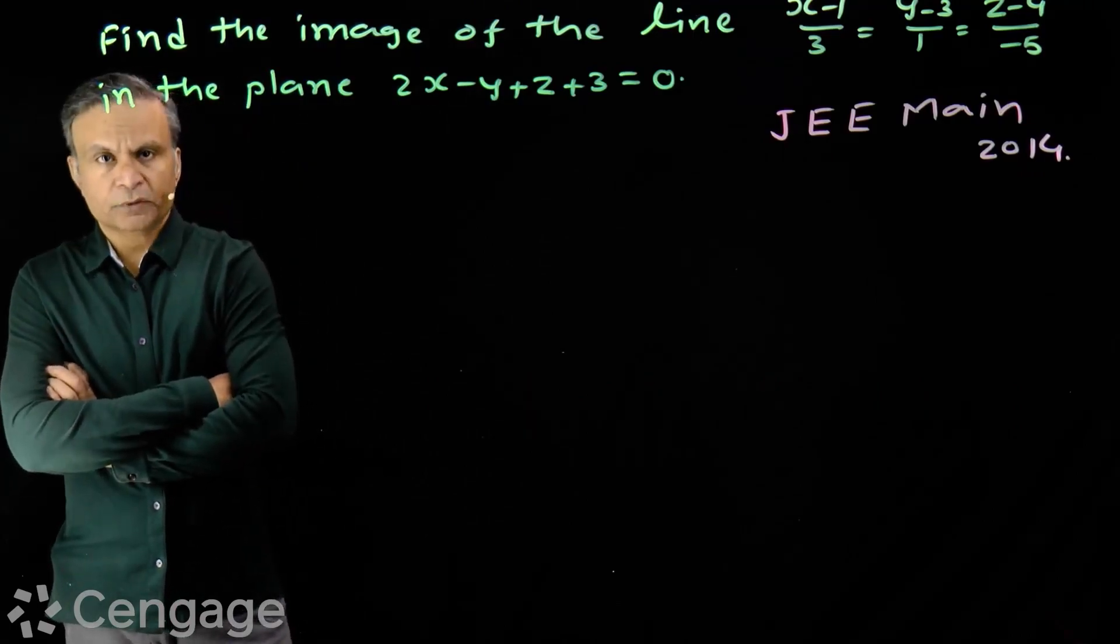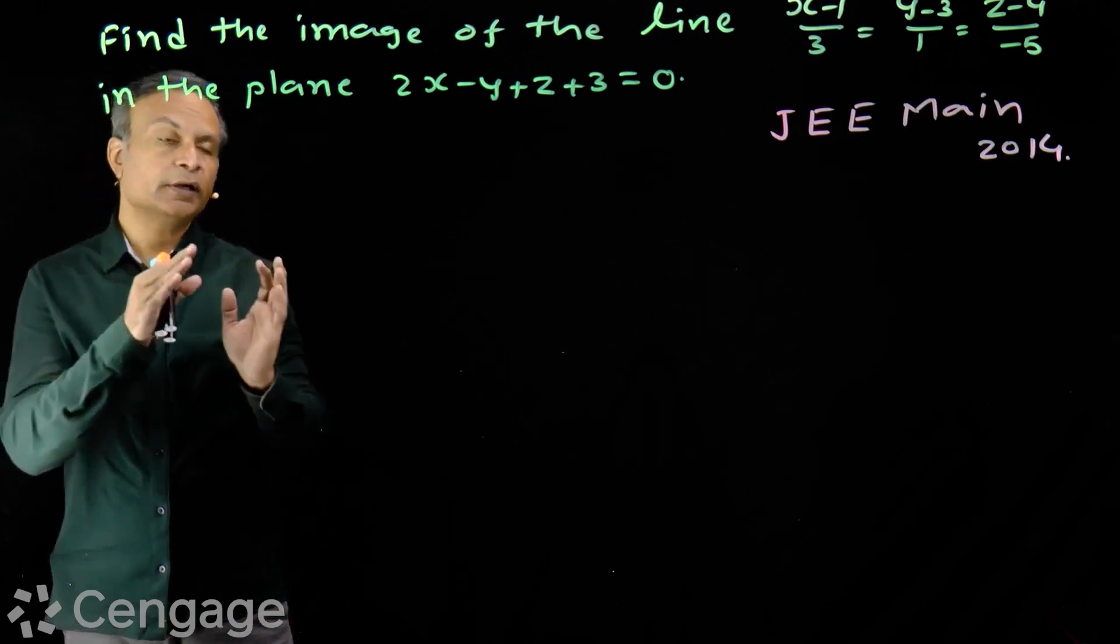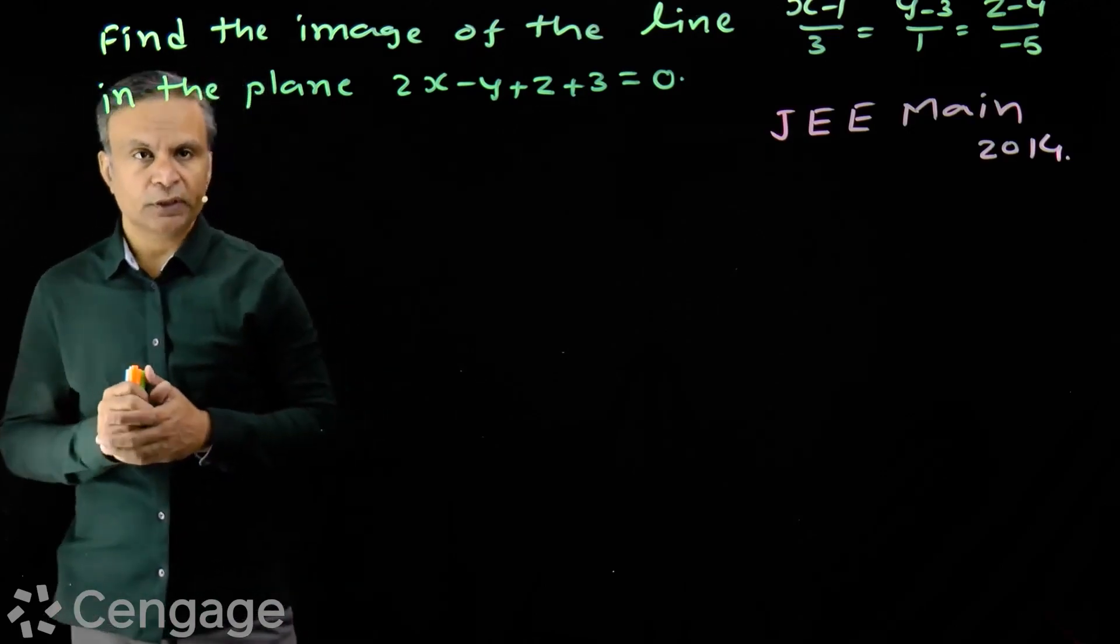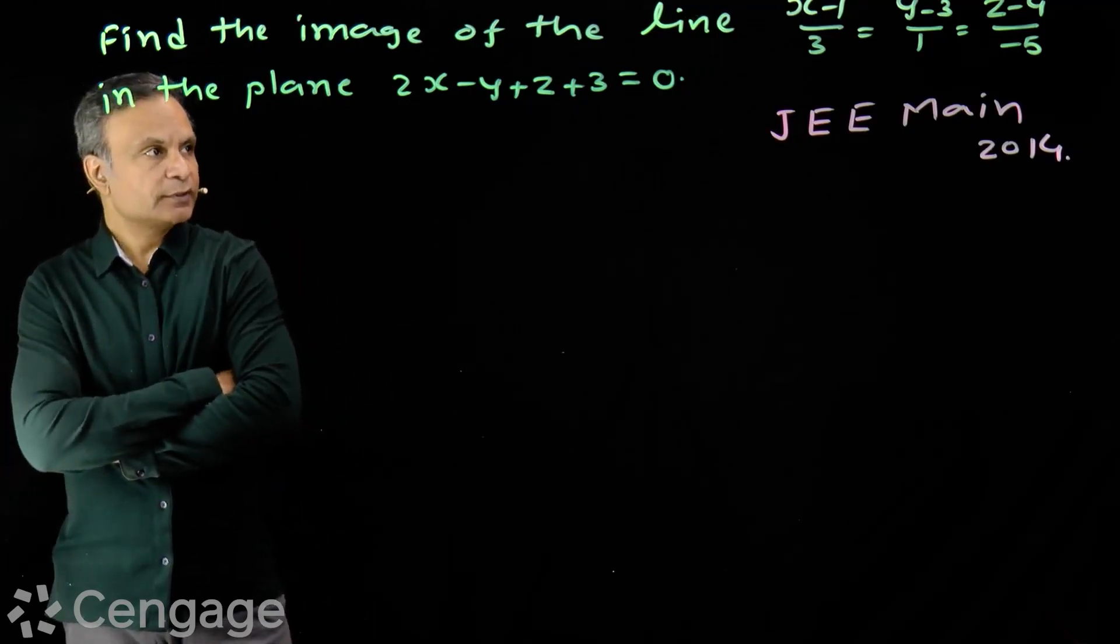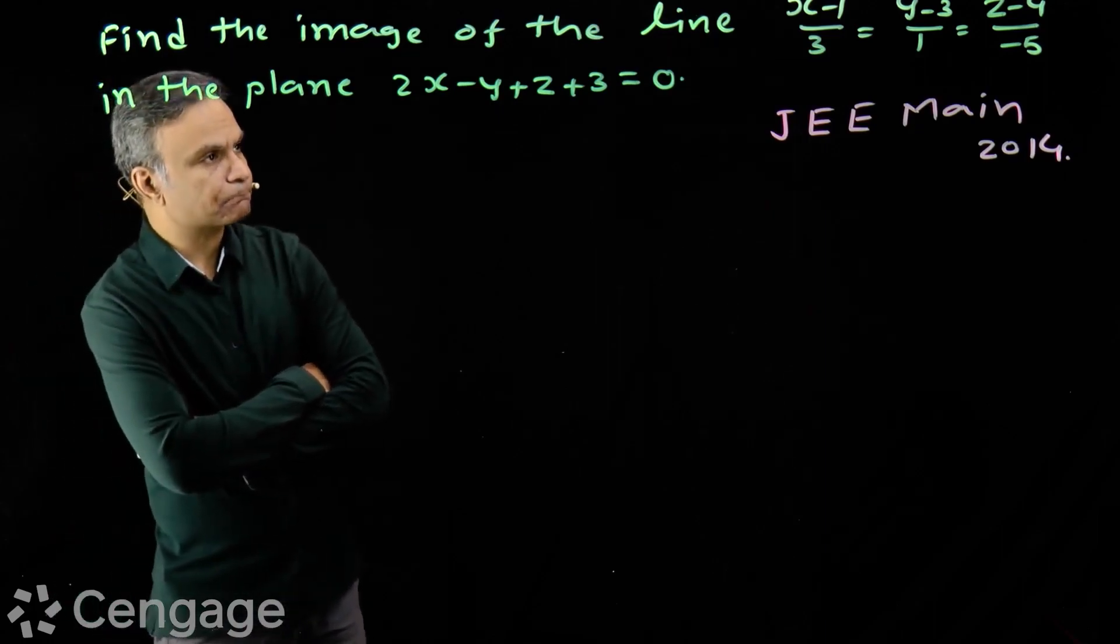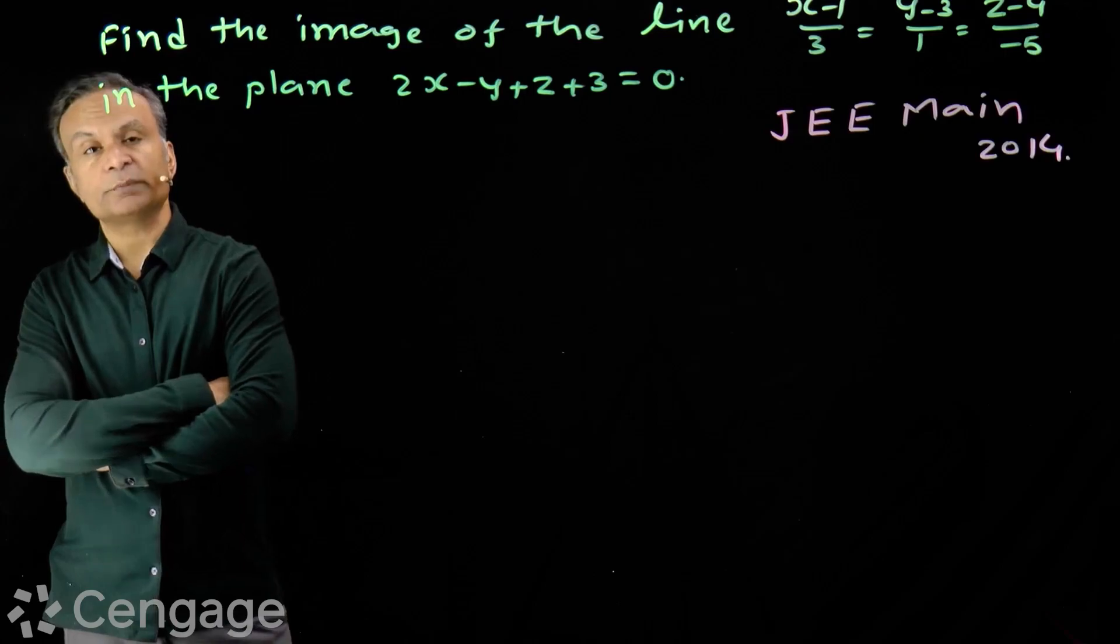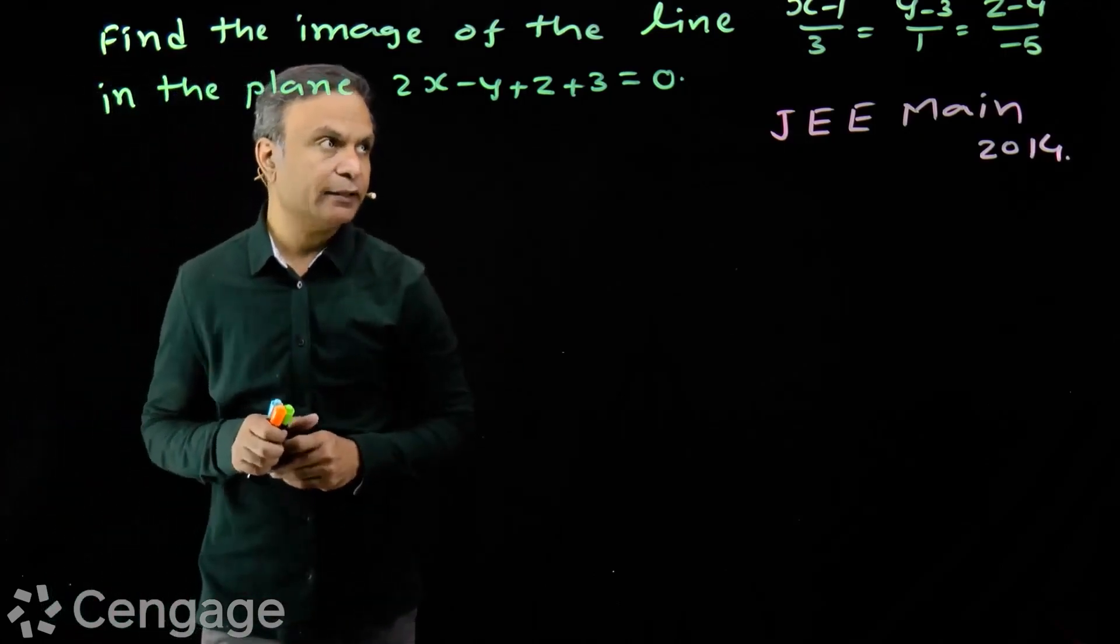Kya karenge? First of all, we will check the positions of line in plane. Line in plane kis tarah se hain? Hum phele yeh check karenge. We check the dot product of vector normal to the plane and vector to which line is parallel.